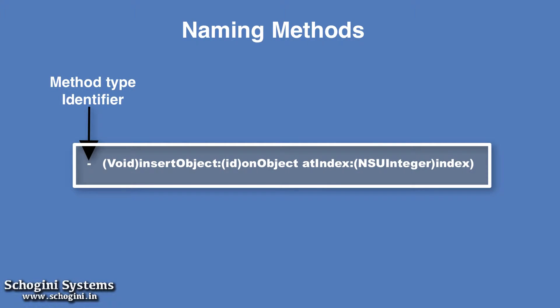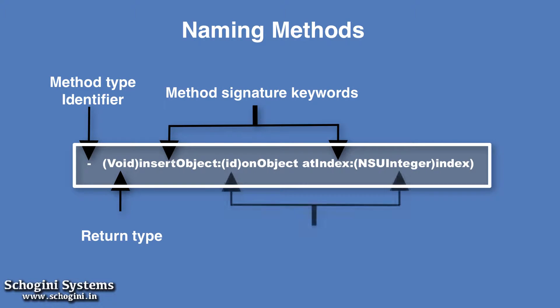First, we can see the syntax used for creating a method in Objective-C. Declaration of a method consists of the method type identifier, a return type, one or more method signature keywords, parameter types, and parameter names information.